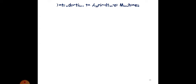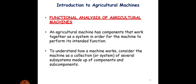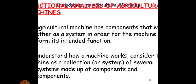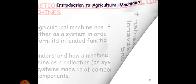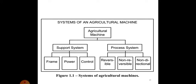Functional analysis of agricultural machines. An agriculture machine has components that work together as a system in order for the machine to perform its intended functions. To understand how the machine works, consider the machine as a collection of several systems made up of components.